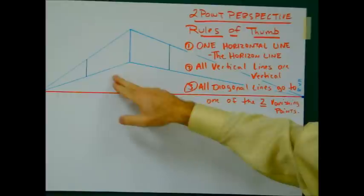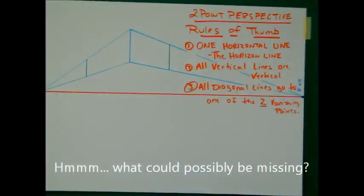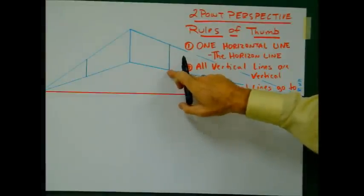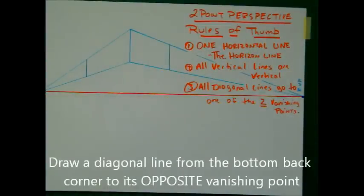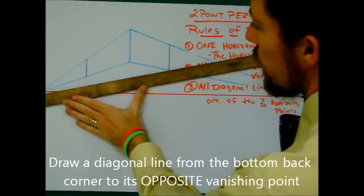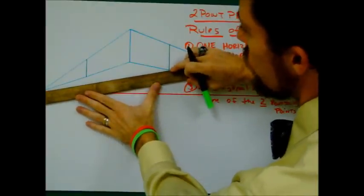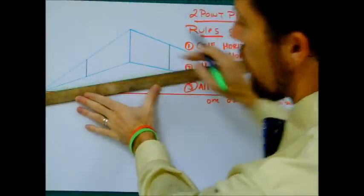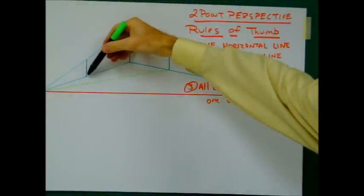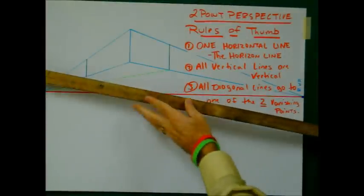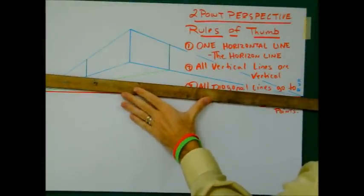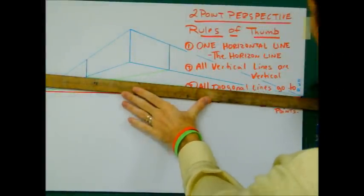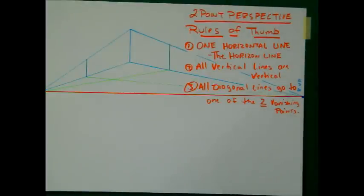What am I missing? That's right — we're missing the bottom of the box. So the next step is to draw from this bottom corner to the opposite vanishing point. I'm going to draw a diagonal line from this bottom corner to the opposite vanishing point, and then from this bottom corner to my other opposite vanishing point — the right vanishing point. And where they intersect is where your box ends.